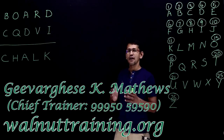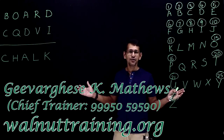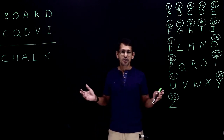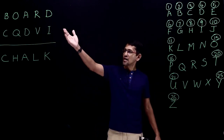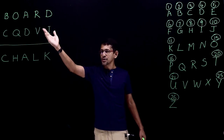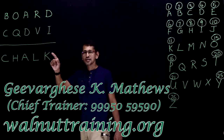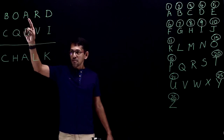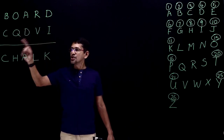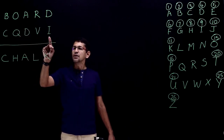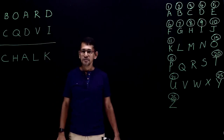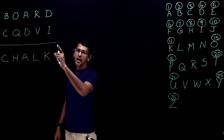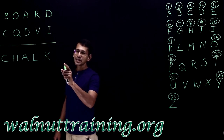From logical reasoning we have different varieties of questions like number series, letter series, coding-decoding, directions, and blood relation. This coding-decoding question is exactly what you face in the exam. The code given here is CQDVI.